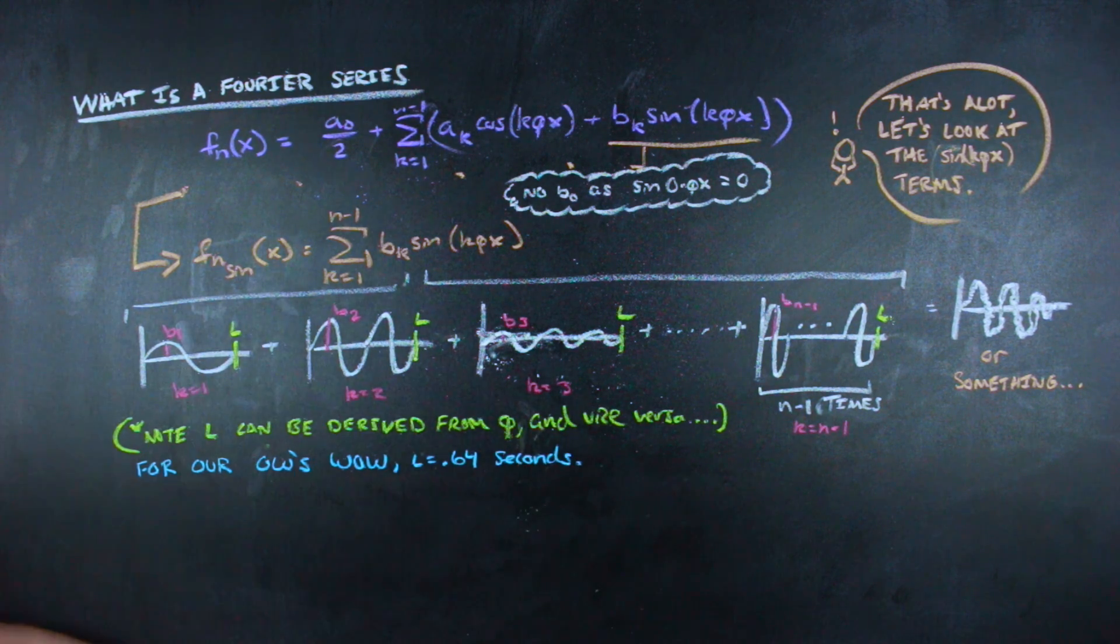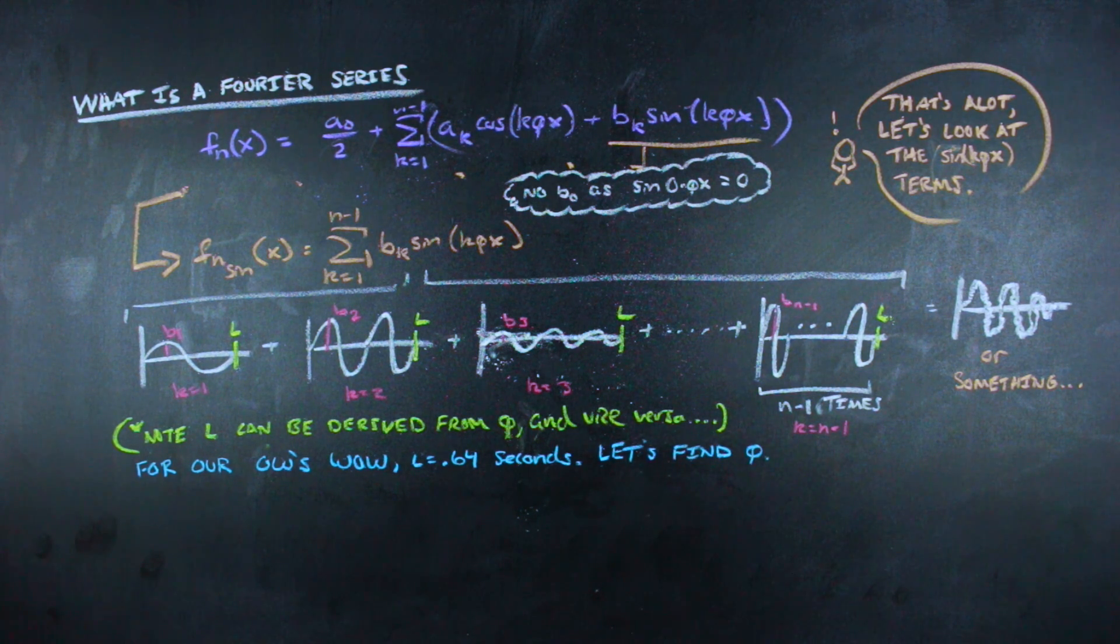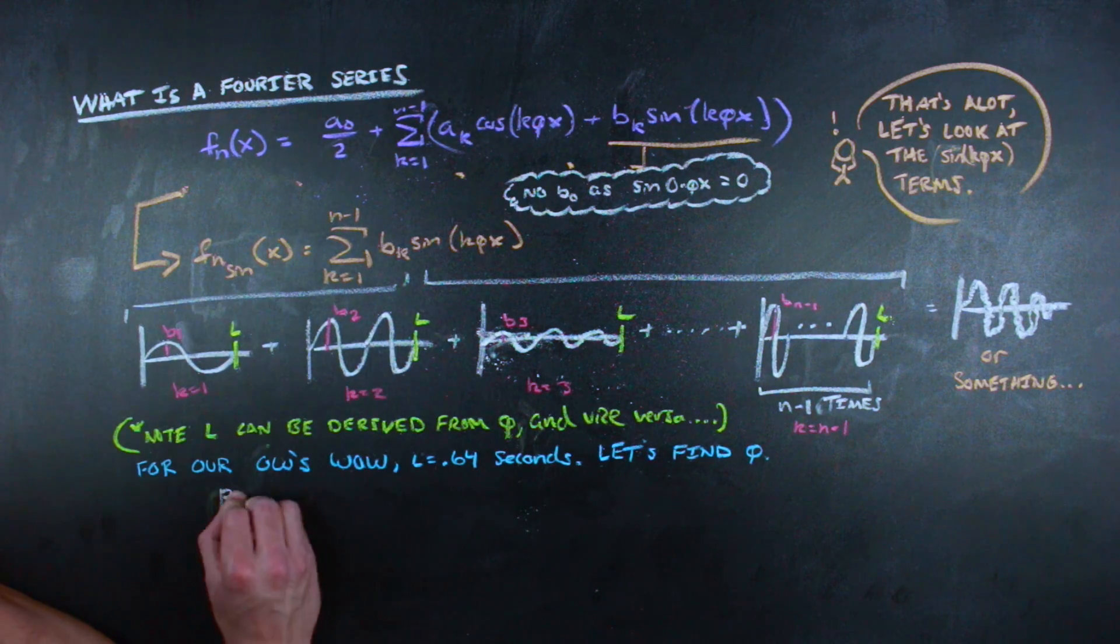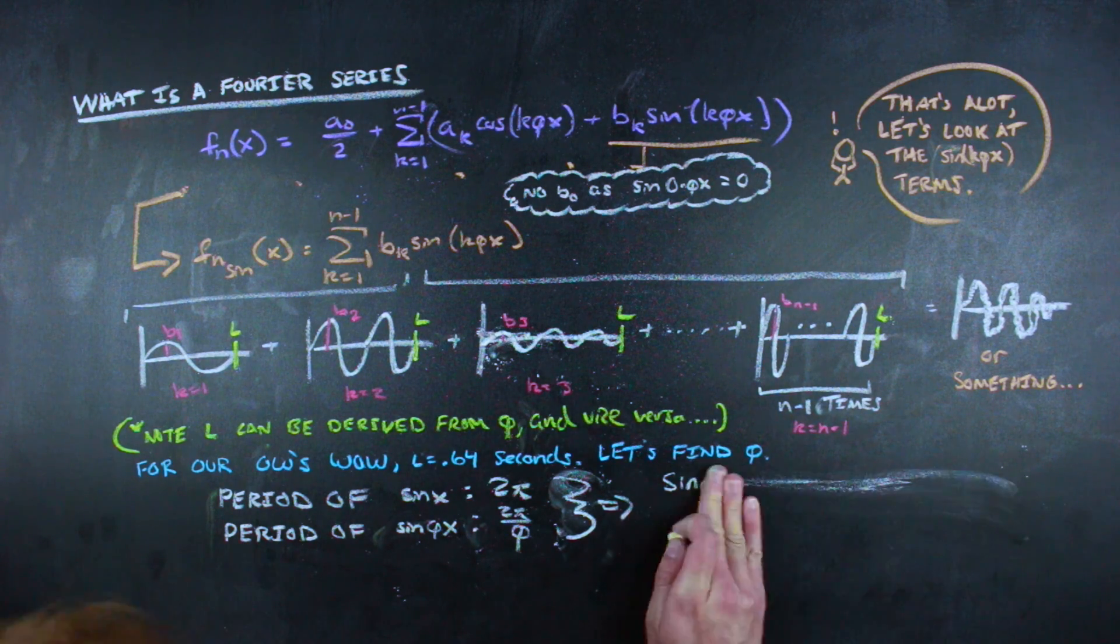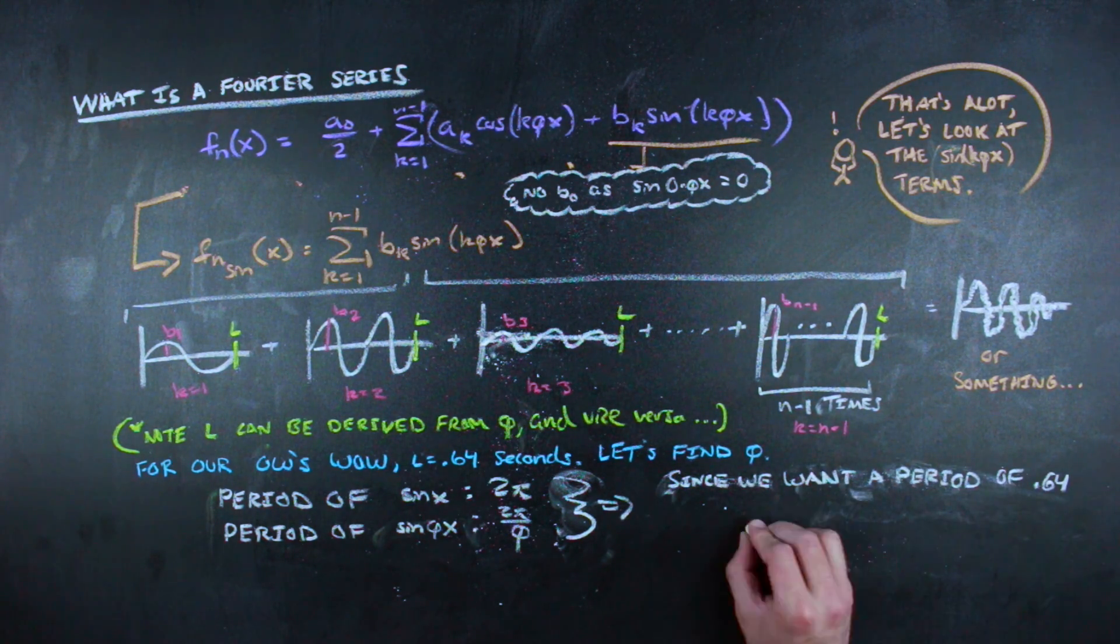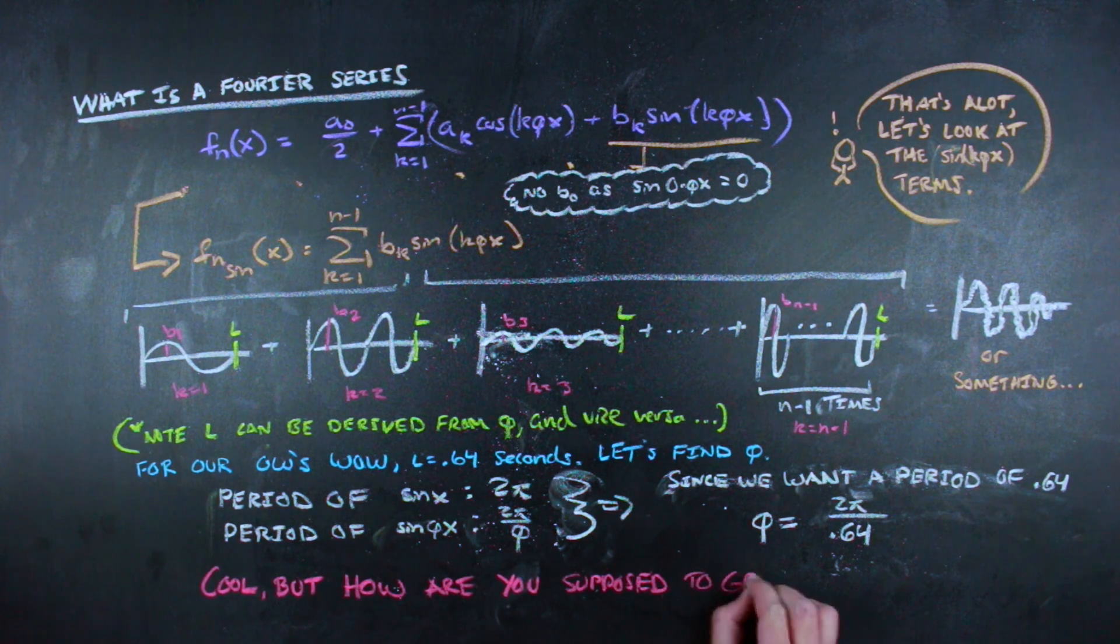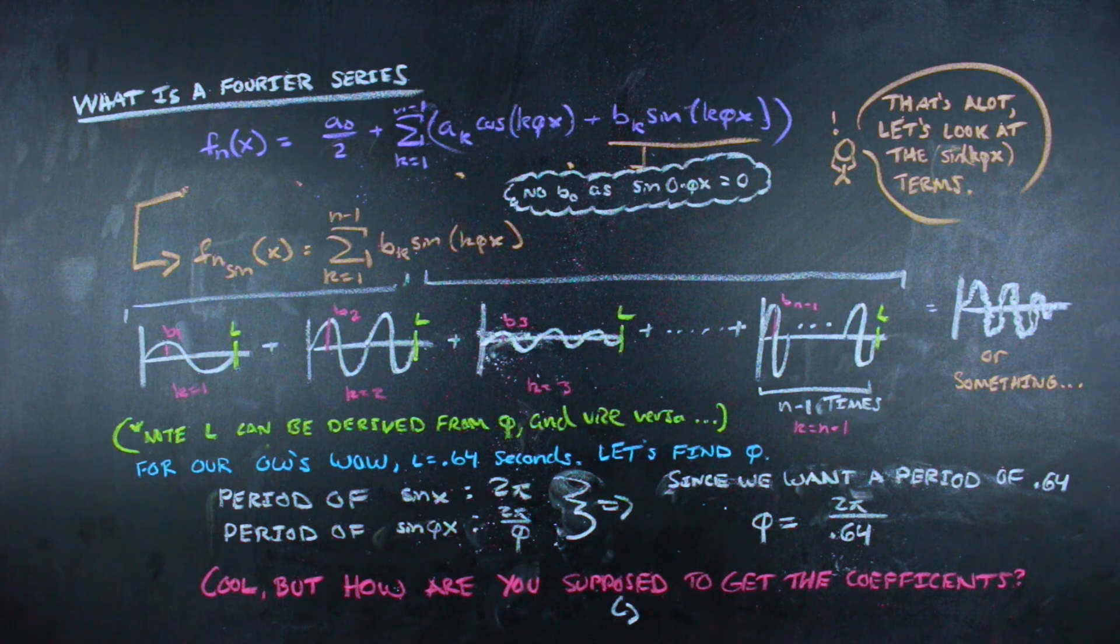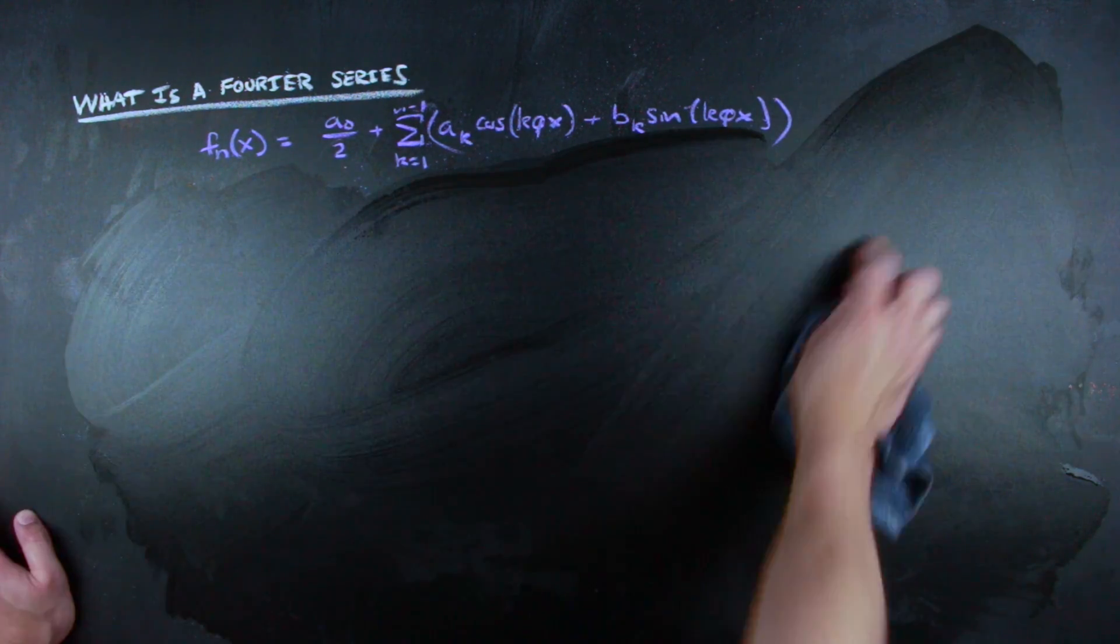That is, phi will force the period of the n equals 1 term to be the length of the recorded sound. For us, that's a whole .64 seconds of totally unadulterated Owen Wilson wow. So recognizing that the period of sin of x is just 2π, and the period of sin of phi x is just 2π over phi, then we can derive that phi should be 2π over .64. Now that we've done a bit of trig and algebra, why don't we just go ahead and bump it up a notch to the calculus? I mean, we're going to have to do this in order to figure out what the code is doing to generate the coefficients that are producing Owen Wilson's wow, or at least up until this point are producing total crap.